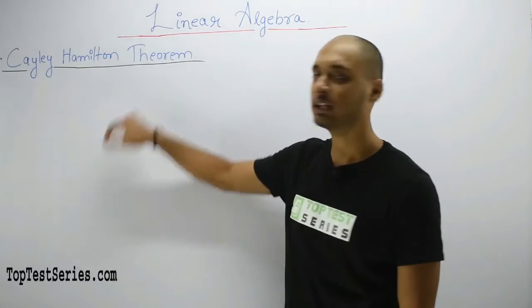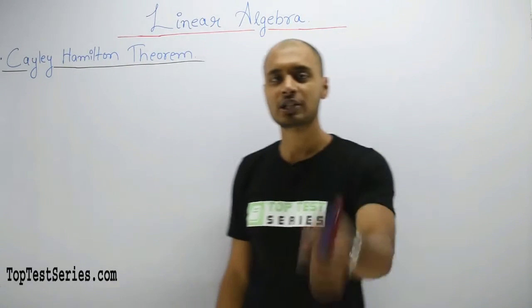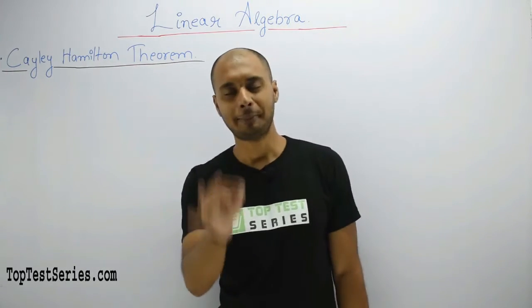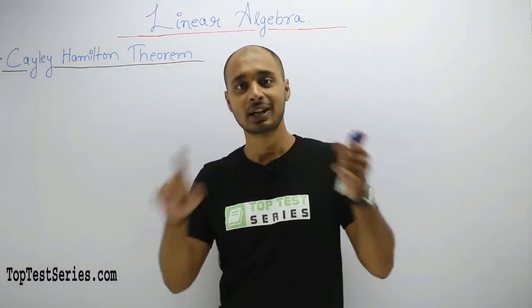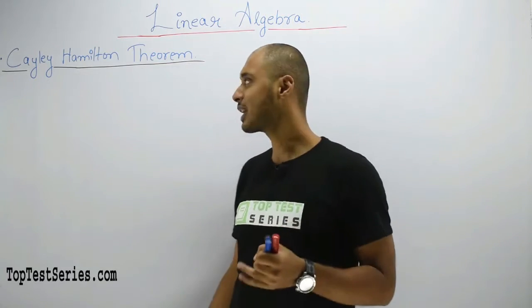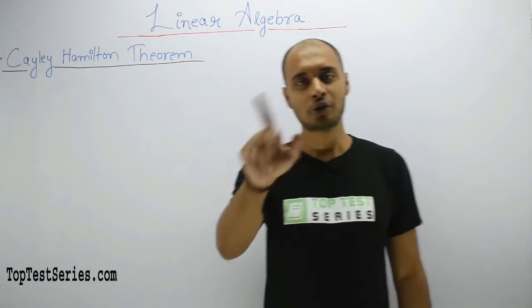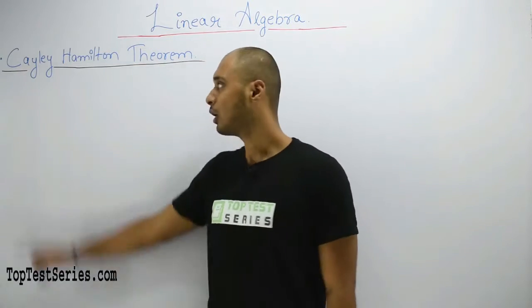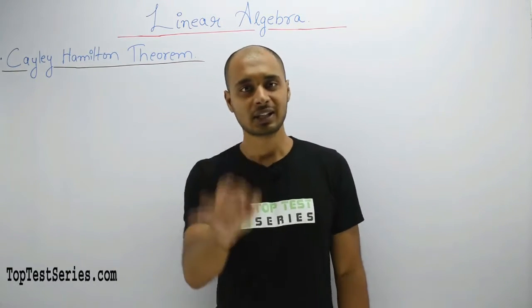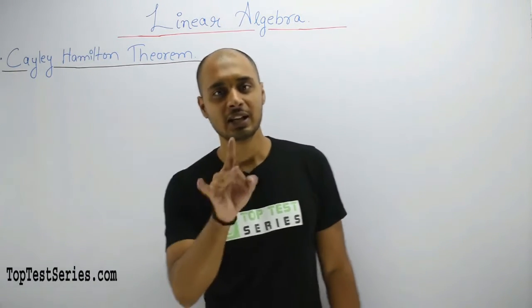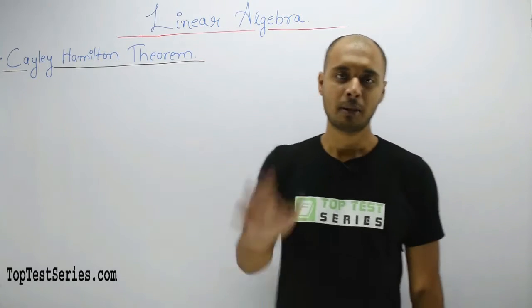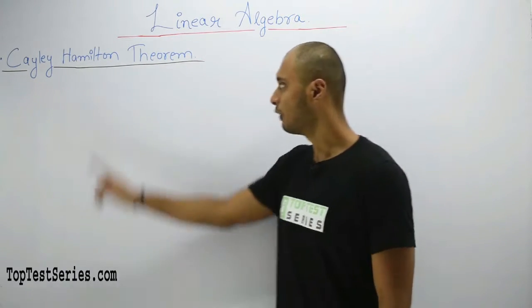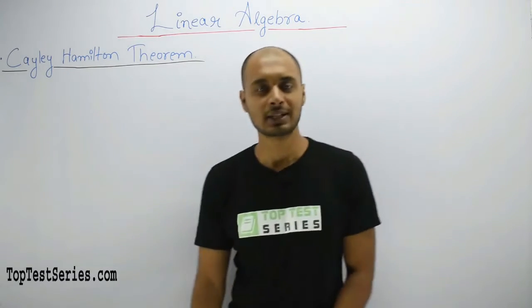Next topic is the Cayley Hamilton theorem. First point: it is only valid for square matrices. Transpose of a matrix, rank of a matrix — these are valid for non-square and square matrices. Determinant, adjoint, inverse, Cayley Hamilton theorem, and the characteristic equation — these are only for square matrices. Transpose and rank can be found for any matrix. So the first point is: it is only valid for square matrices.